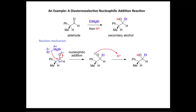We'll start by looking at the reaction mechanism — this is a classic nucleophilic addition. The electrons from the carbon-magnesium bond attack the electropositive carbon in the aldehyde group, pushing the electron density onto the electronegative oxygen to form a tetrahedral alkoxide ion, which is then protonated to form the secondary alcohol product. There we have the existing chiral center, present throughout the starting material, but we form a new chiral center in the product.